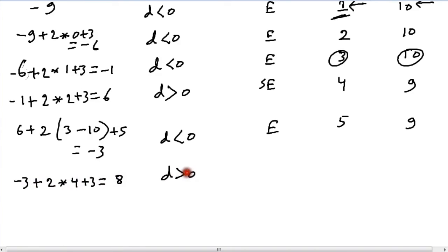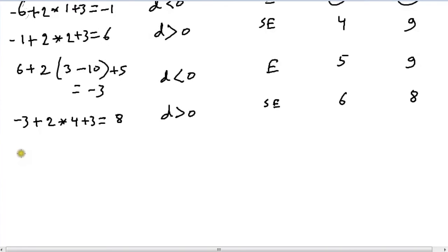8, so d is greater than 0, we choose pixel SE. Our x coordinate goes up by 1, y coordinate goes down by 1. Our next increment is 8 plus 2 into xp minus yp plus 5. Now this gives us 5. d is greater than 0 which is SE once again. x becomes 7, y becomes 7. We will try this one more time. So that's 5 plus 2 into 6 minus 8 plus 5, this gives us...